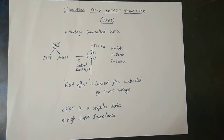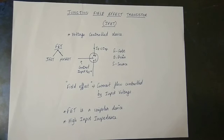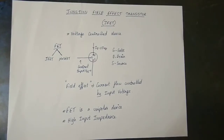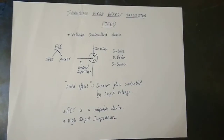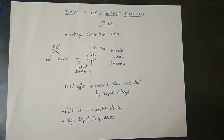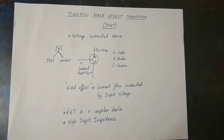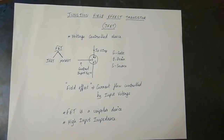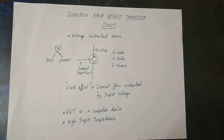If you look at JFET, it is a unipolar device in terms of current flow. Comparing with BJT — which is a Bipolar Junction Transistor — JFET has high input impedance. Because of this high input impedance, a low amount of input current flows, which helps control device damage and prevents issues.